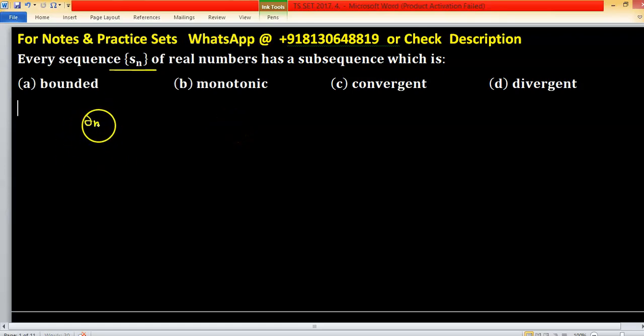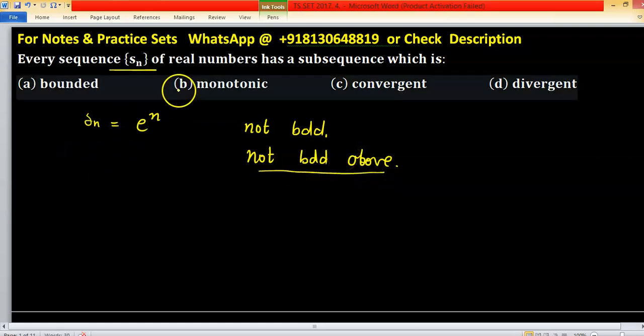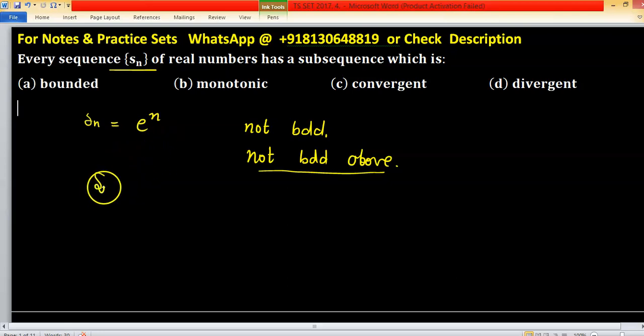If we consider a sequence Sn as e raised to the power n, then this sequence is not bounded, or more precisely, not bounded above. And if you take a subsequence, the subsequence of Sn is also not bounded. So option a is discarded.